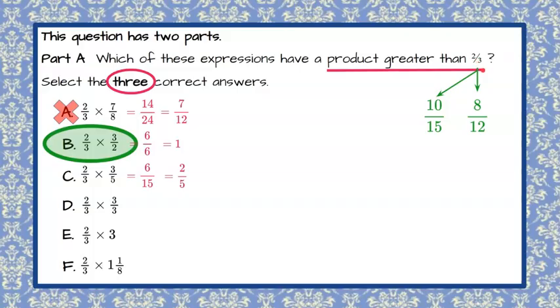So 10 fifteenths is an equivalent ratio to 2-thirds. Take both numerator and denominator, multiply by 5, you get 10 fifteenths. So now we're going to compare 10 fifteenths for our value of 2-thirds, and C is 6 fifteenths. 6 fifteenths is smaller. So C is not one of our answer choices.